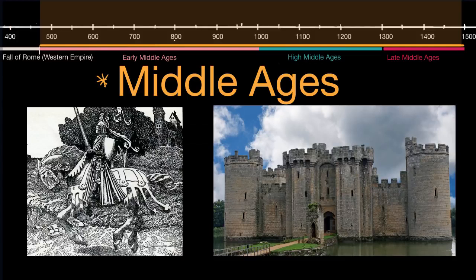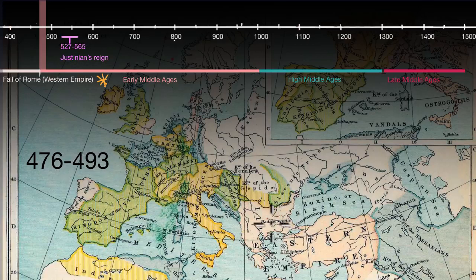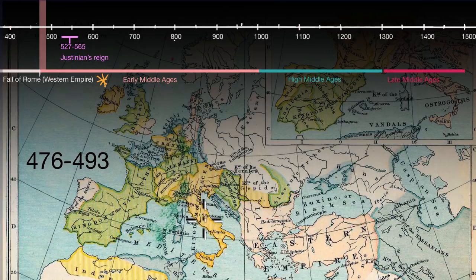Let's start with what Europe looked like right after the fall of the Western Roman Empire. This map refers to the time period between 476, when Odoacer takes over Rome, and 493. You can see the Eastern Roman Empire is still here, but the Western Roman Empire is now fragmented amongst many Germanic kingdoms — you have the Visigoths, the Franks, the Kingdom of Odoacer. With the fall of Rome, we are entering into the Early Middle Ages.